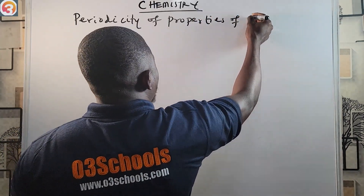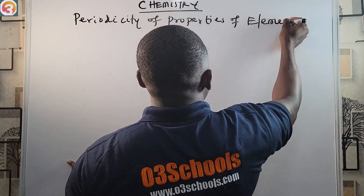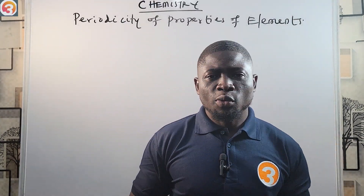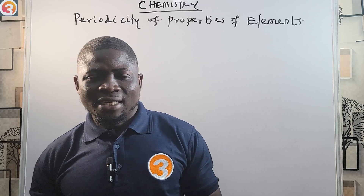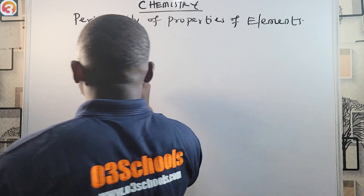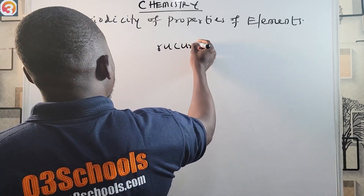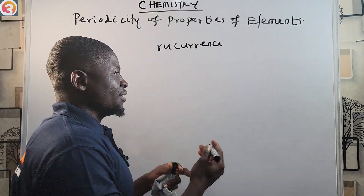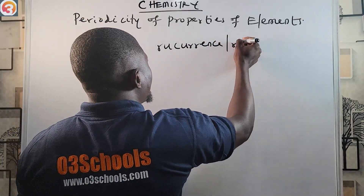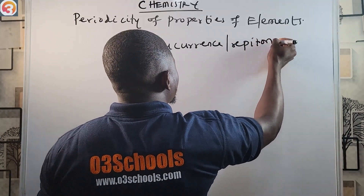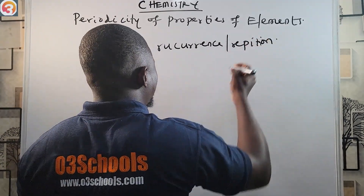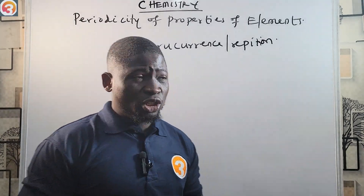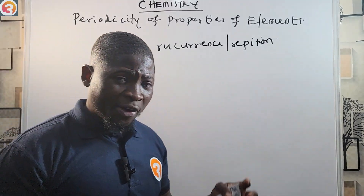Some elements show periodicity, that is recurrence — recurrence means occurring at regular intervals. So some elements show recurrence, they show repetition at regular intervals.